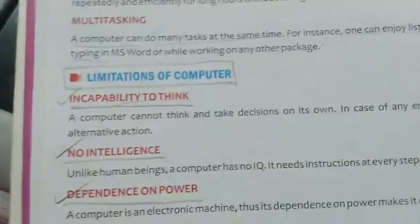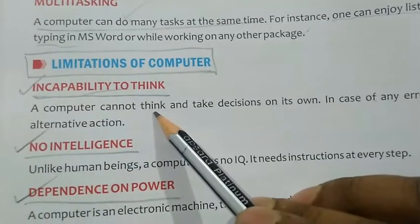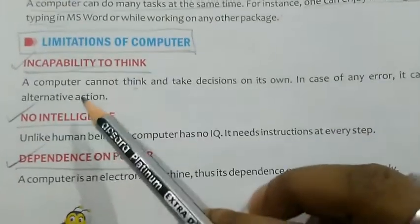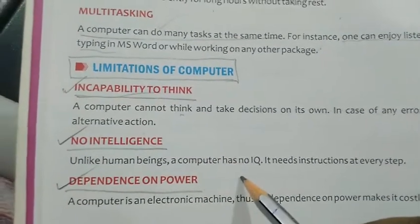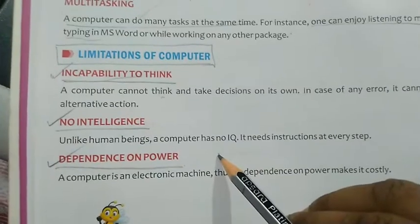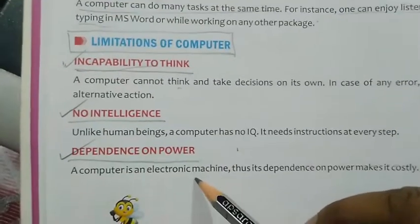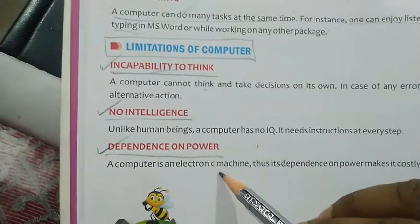The limitations of a computer include: first, incapability to think — like human beings, a computer cannot think or take decisions on its own, and in case of error, it cannot take alternative action. Second, no intelligence — a computer has no IQ and will work only as per instructions given by the user, not doing anything extra. Third, dependence on power — if there is no electricity or shortage of power, we cannot use the computer.